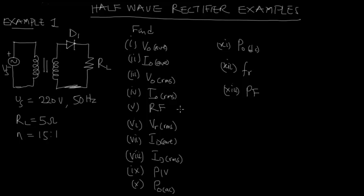We will also find the frequency of the output ripple and the input power factor. To get the formulas and equations used in solving this problem, please look at the description below, where in a previous video we discussed the derivations of expressions for the half wave rectifier circuit. That video covers the derivations of all these formulas we are going to use in this example.